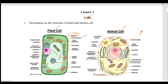Cell membrane is found in both the plant cell and the animal cell. Please note that the cell membrane can also be called the plasma membrane — both names refer to the same thing. The next very important difference is the chloroplast — chloroplast is found in plant cells but we do not find chloroplast in animal cells.